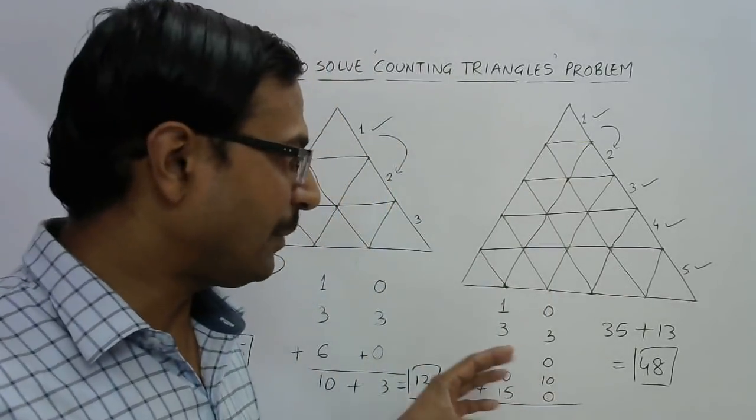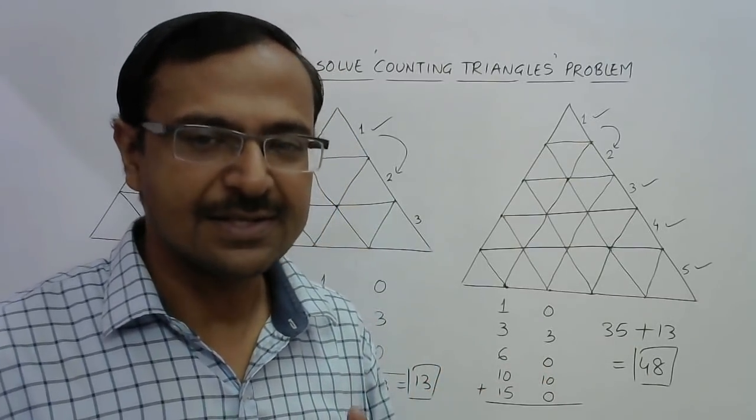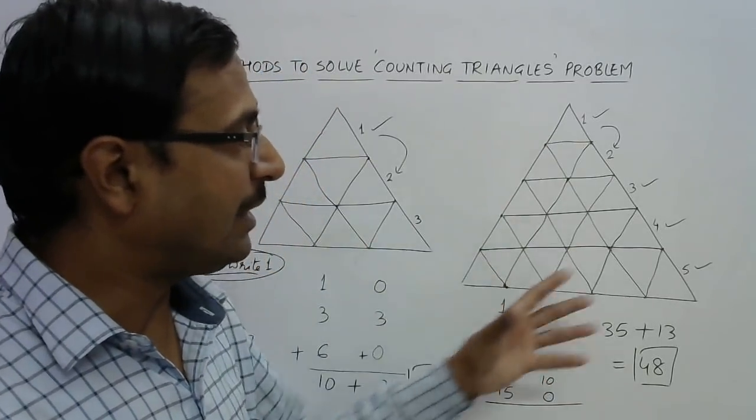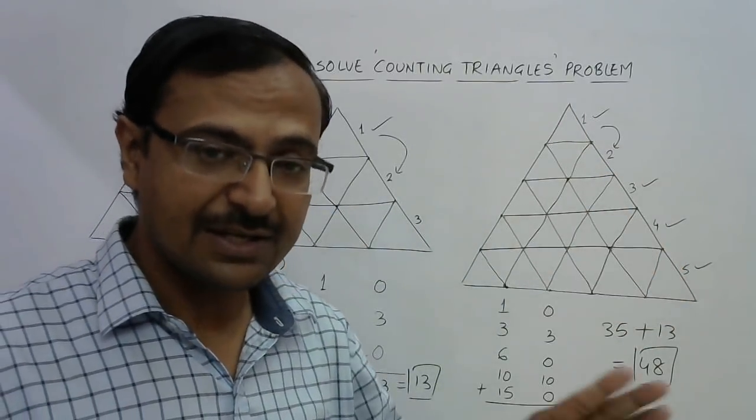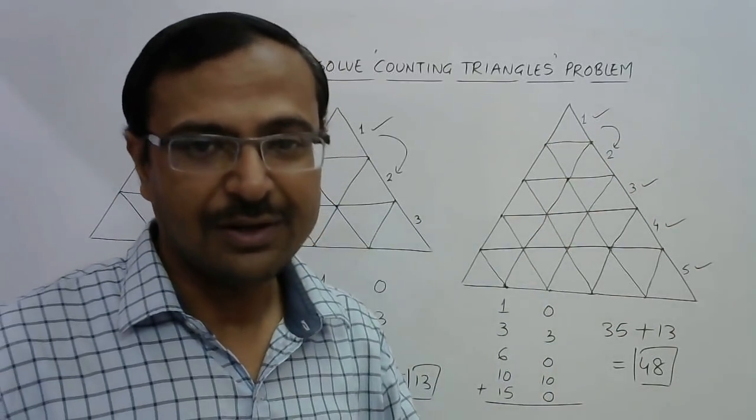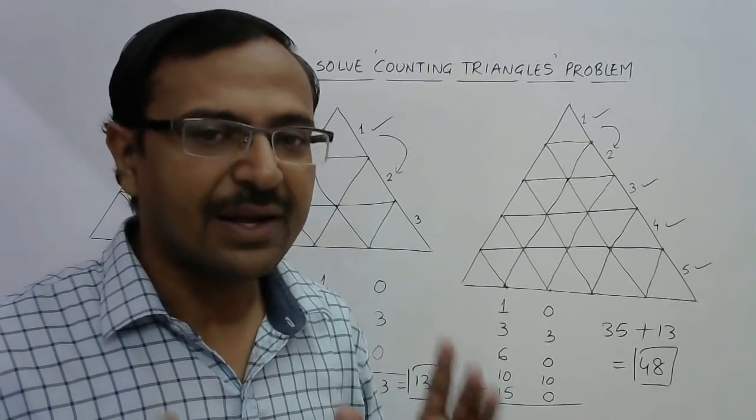Isn't that amazing? A small method and you know how many triangles are there in this figure. Friends, this method can be applied to any larger figure also in which there are 6, 7, 8, 9, even 10 triangles along each side of the larger triangle. You will get the accurate answer every time.